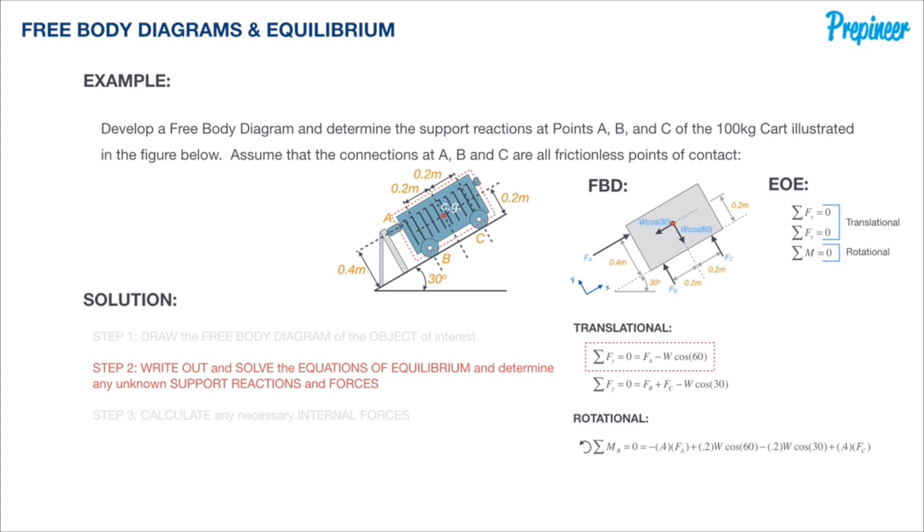Looking at all these equations, I want to start with the sum of the X components because there's only one unknown. We know self-weight, so all we have to do is plug in that information. Once we do that, we get the reaction at point A, or F sub A, is equal to 491 newtons.